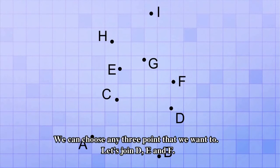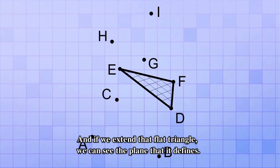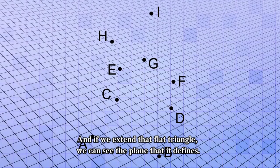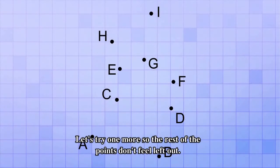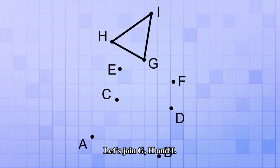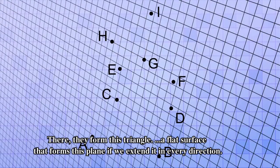We can choose any three points that we want to. Let's join D, E, and F. Now we can see the triangle they form, and if we extend that flat triangle, we can see the plane that it defines. Let's try one more so the rest of the points don't feel left out. Let's join G, H, and I. There! Now they form this triangle, a flat surface that forms this plane if we extend it in every direction.